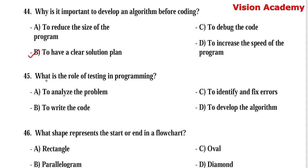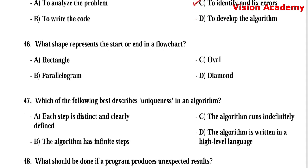Question number 45: What is the role of testing in programming? Option A, to analyze the problem. Option B, to write the code. Option C, to identify and fix errors. Option D, to develop the algorithm. Here, option C, to identify and fix errors, is the right answer.